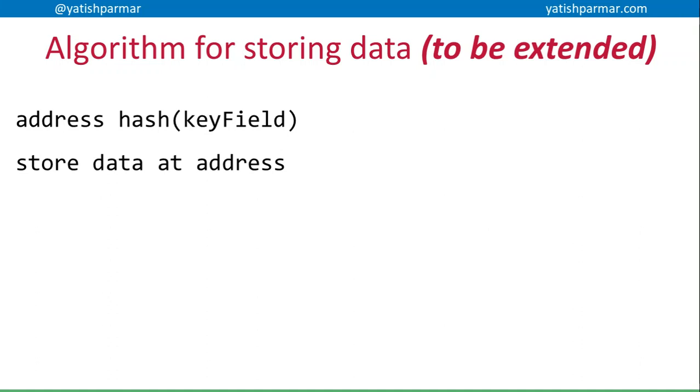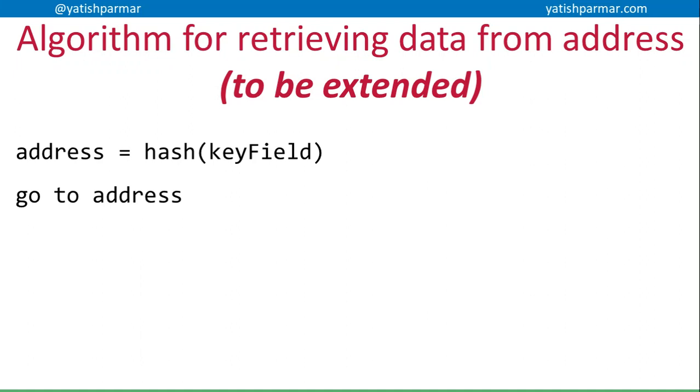...is that basically all I'm doing is hashing my key field in order to get an address, and then I'm going to store that data at the address. If I want to retrieve the data, I'm going to hash the key field to get an address, and then I'm going to go to that address and like magic, that data should be accessible from that address.